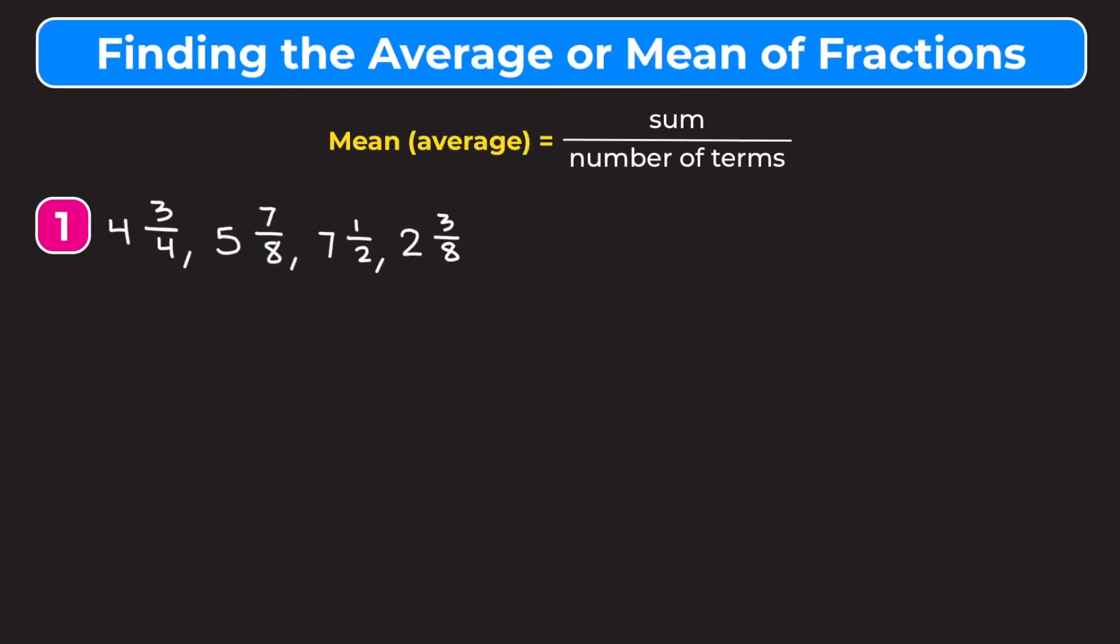In this video, we're going to work through two examples where we're finding the average or mean of a set of numbers that involve fractions. If you take a look at the top of our screen, we have the formula for finding the mean or the average, which says we just want to take the sum of the numbers and divide it by the number of terms.